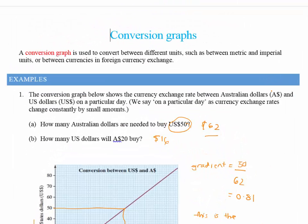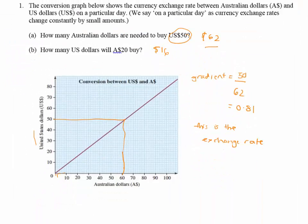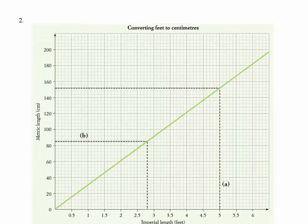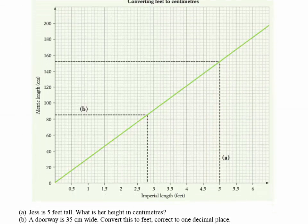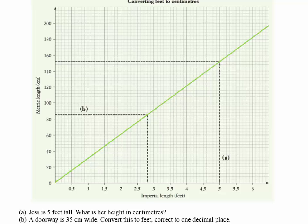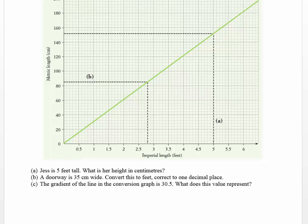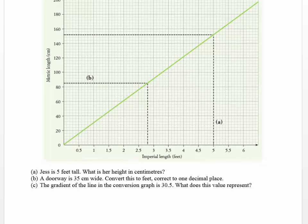Meaning that one Australian dollar is giving you 81 US cents on this particular day. So let's have a look at our last question. Here we have another conversion, and this conversion is converting feet to centimeters. Jess is 5 feet tall. What is her height in centimeters? So here is my 5 feet tall.